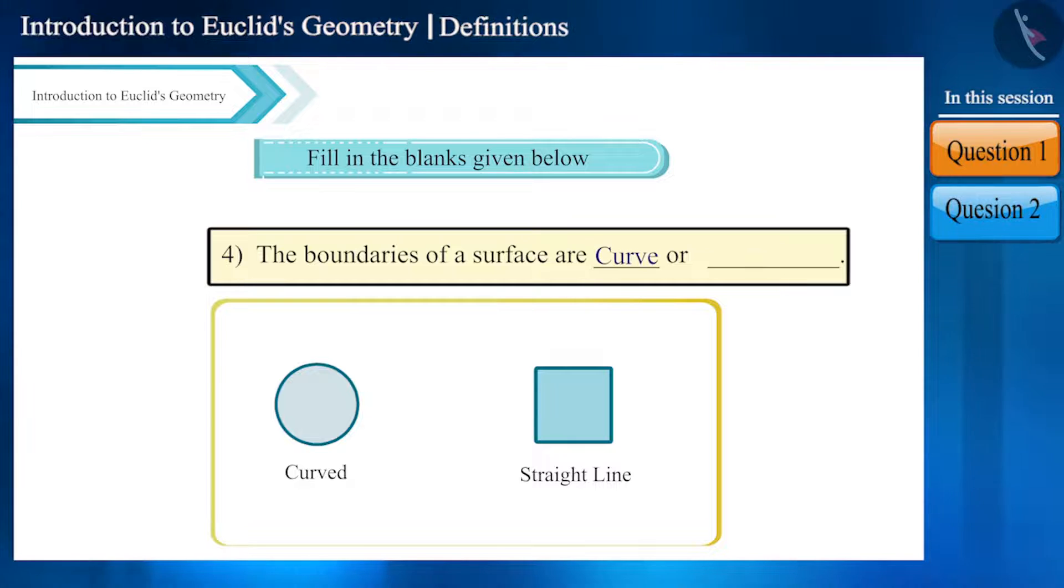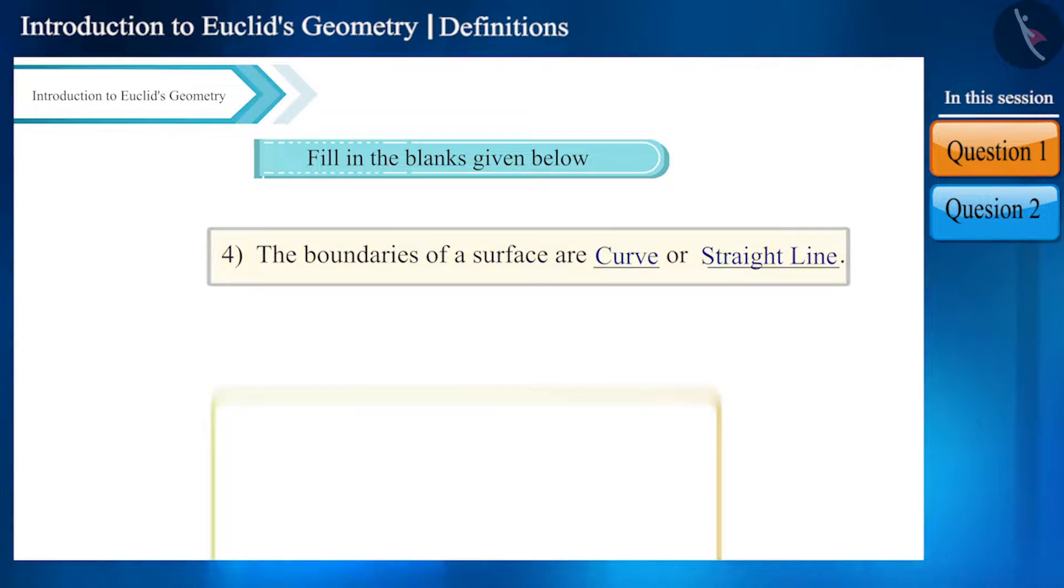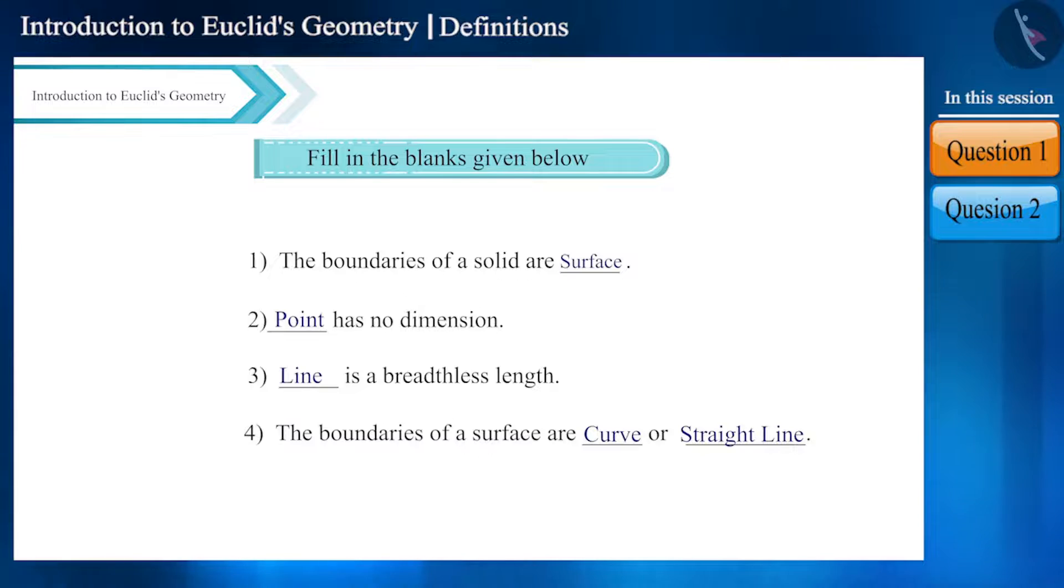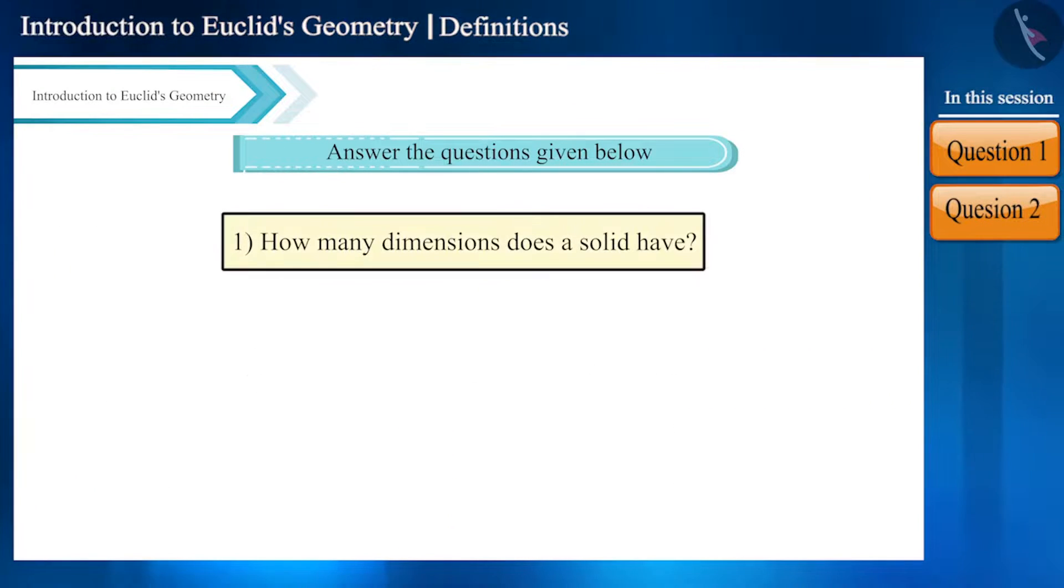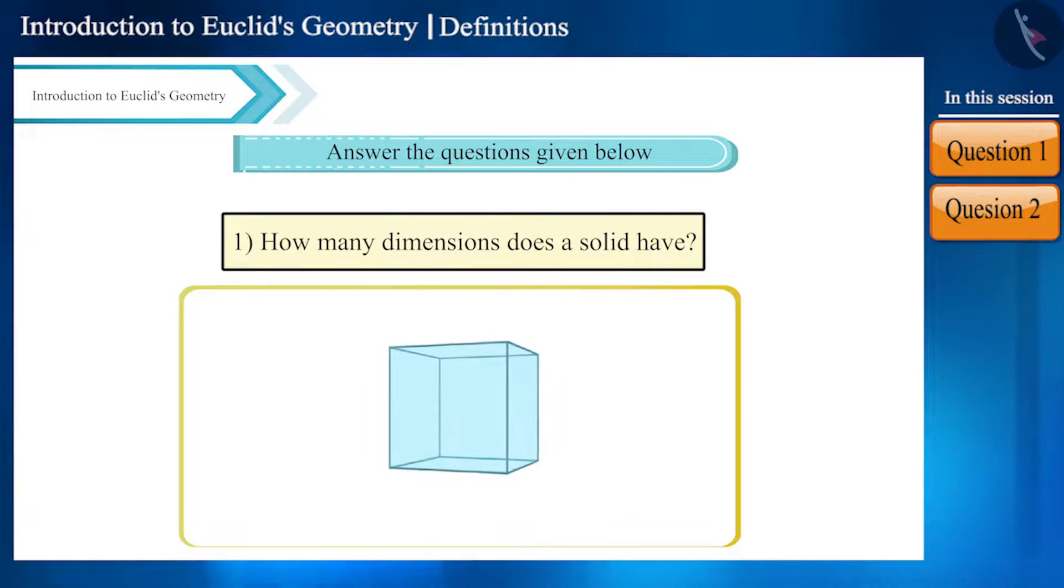Let's see some more questions. In the first question we have to identify the dimensions of a solid. Any solid object has length, breadth, and height, so a solid has three dimensions.